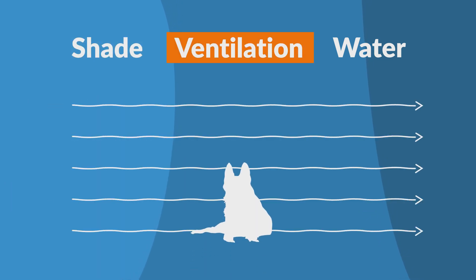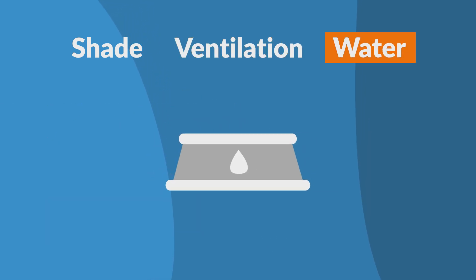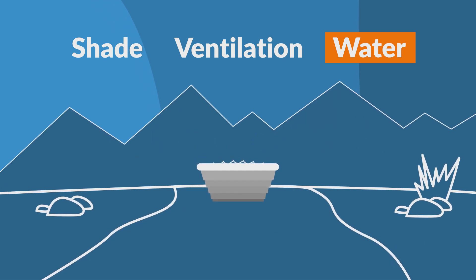Ventilation is also important as temperatures can rise in enclosed areas. Drinking water helps cool your pet from the inside out. When you're out and about, bring a collapsible water dish with you.